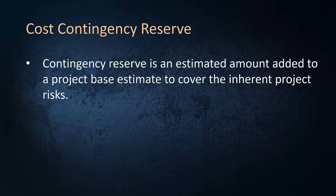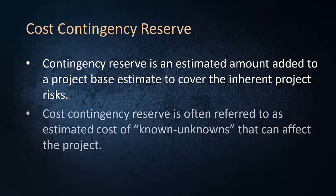Contingency reserve is an estimated amount added to a project-based estimate to cover the inherent project risks. Cost contingency reserve is the estimated cost of risks that probably would happen based on past experience, but with some uncertainty regarding their exact amount. The cost estimator is aware of those risks and, based on his or her experience, can even estimate their likely costs. That's why cost contingency reserve is sometimes referred to as the estimated cost of known unknowns that can affect the project.